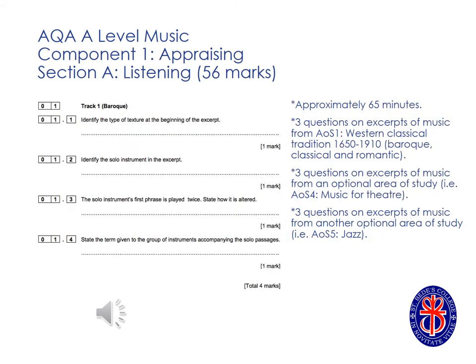The first section of the exam paper is similar to section A of the GCSE Music course, with questions on unfamiliar pieces of music. Students have to answer nine questions, three of which are in relation to Area of Study 1, the Western Classical Tradition. The other six questions explore the optional areas of study. At St Bede's, students will study Area of Study 4, Music for Theatre, and Area of Study 5, Jazz. This section lasts for approximately 65 minutes.